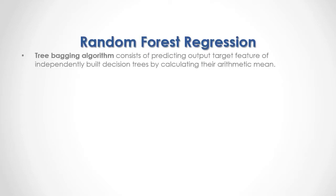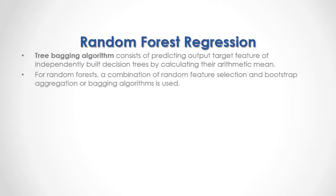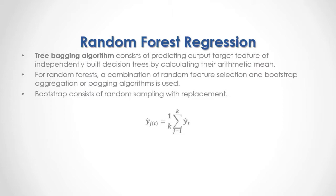The Tree Bagging Algorithm consists of predicting the output target feature of independently-built decision trees by calculating their arithmetic mean. For Random Forests, a combination of random feature selection and bootstrap aggregation or bagging algorithms is used. Bootstrap consists of random sampling with replacement. As a formula, the independently-built decision trees' mean output target feature prediction equals 1 divided by k, where k is the number of independently-built decision trees, multiplied by the sum of each tree's output target feature prediction.